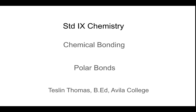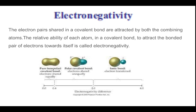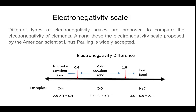This topic is prescribed in the syllabus of standard nine students' chemistry. The chapter is chemical bonding and the topic is polar bonds. We are familiar with the term electronegativity. The electron pairs shared in a covalent bond are attracted by both the combining atoms. The relative ability of each atom in a covalent bond to attract the bonded pair of electrons towards itself is known as electronegativity.